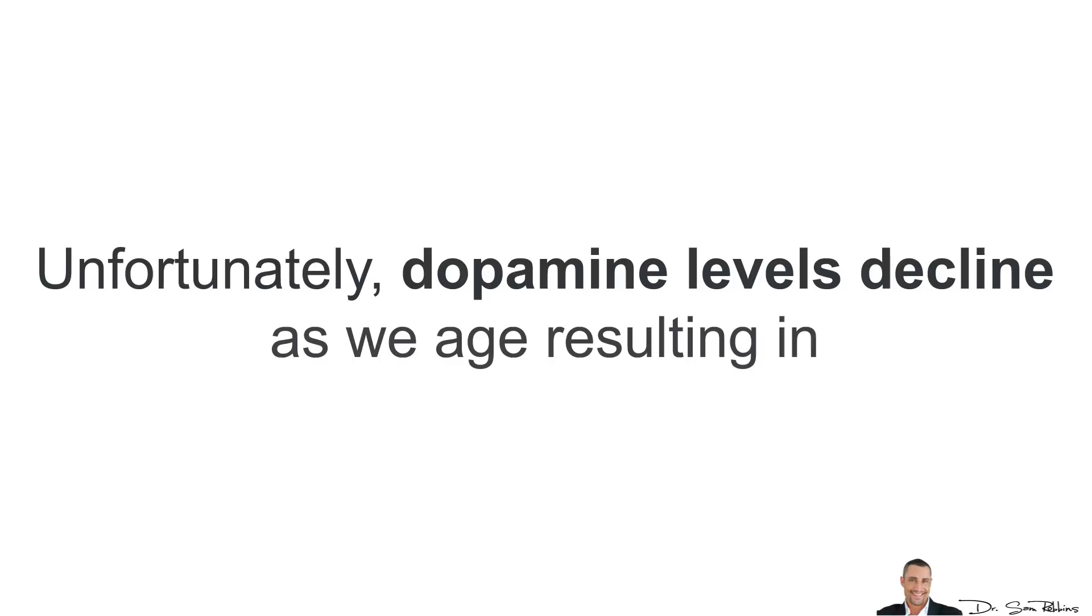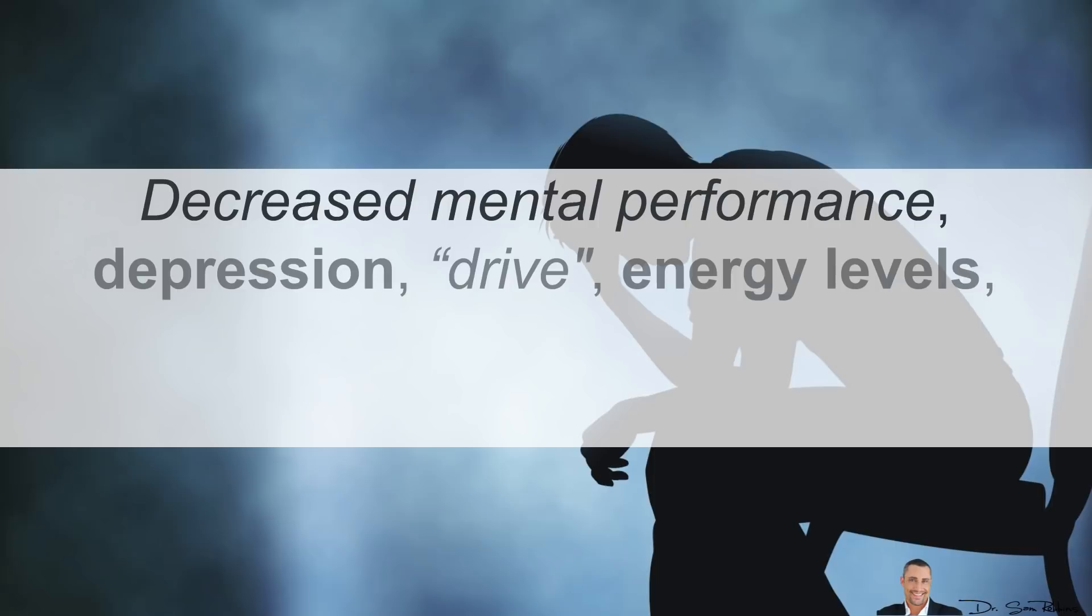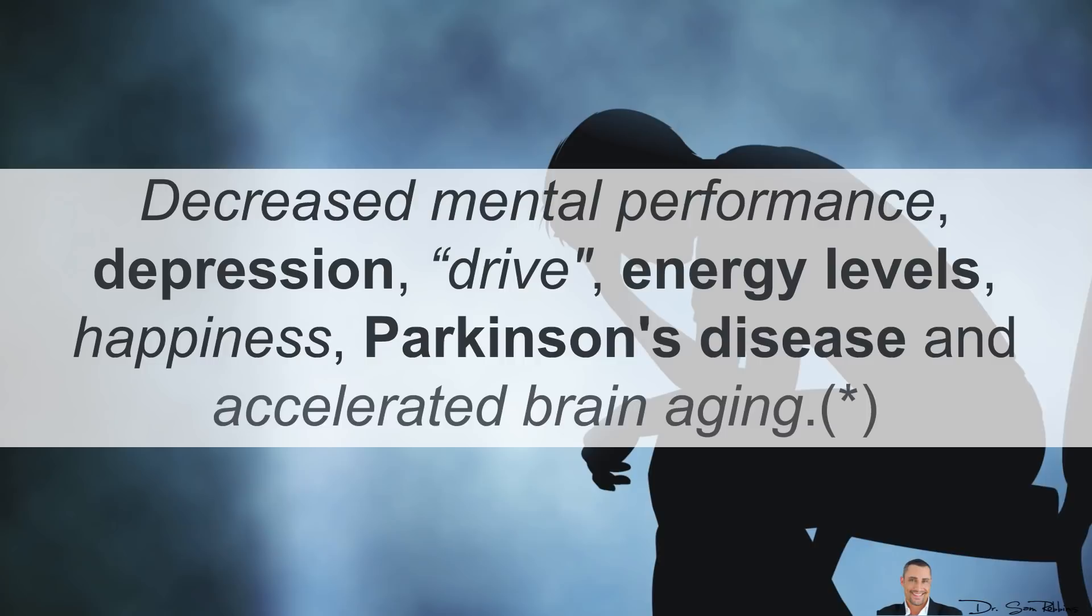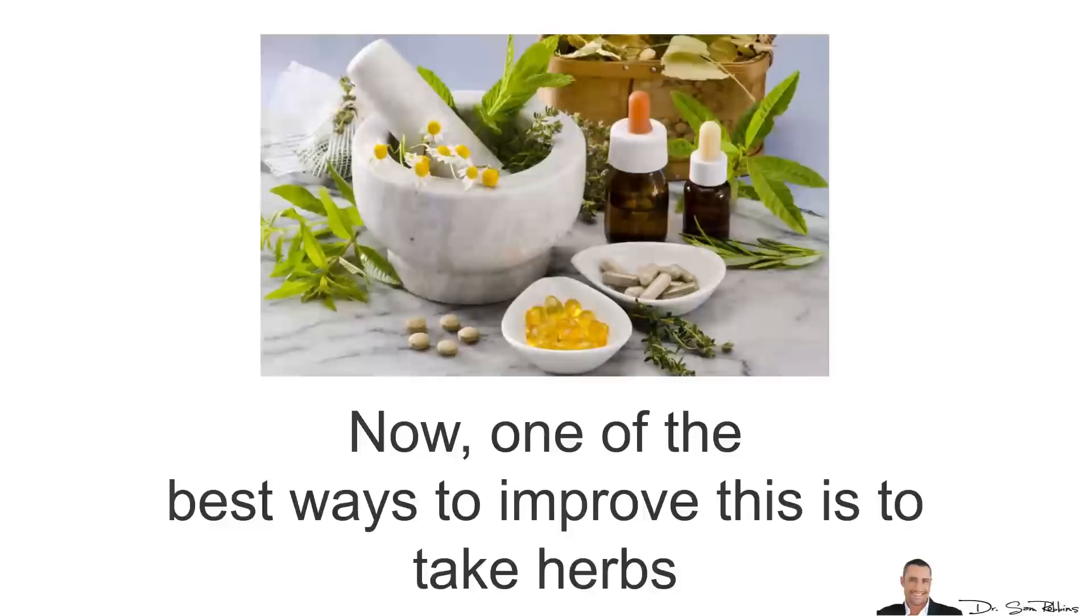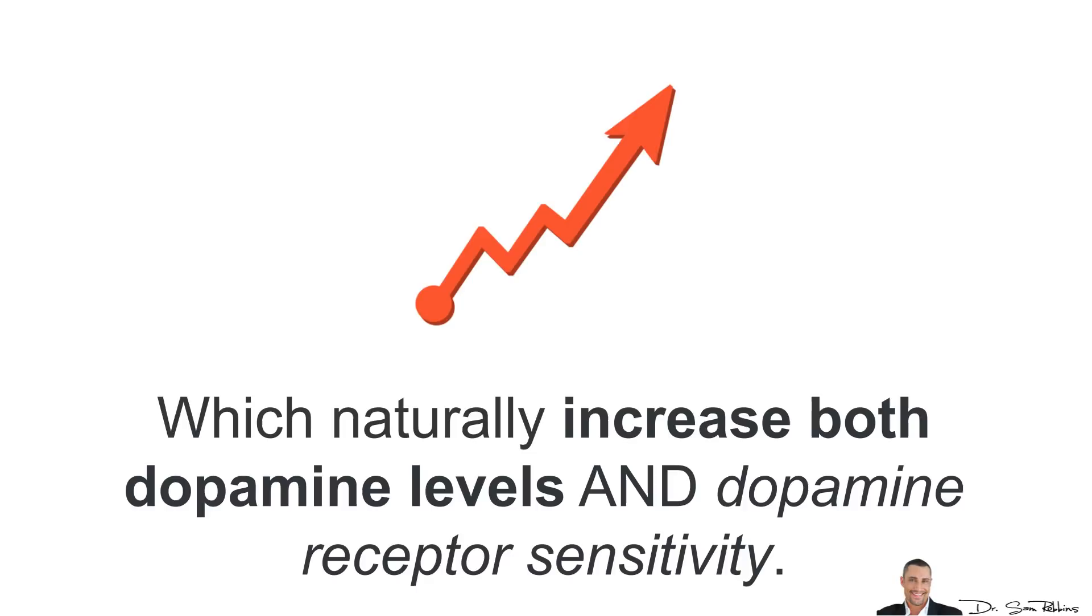Unfortunately, dopamine levels decline as we age, resulting in decreased mental performance, depression, drive, energy levels, happiness, Parkinson's disease and accelerated brain aging. One of the ways to improve this is to take herbs which naturally increase both dopamine levels